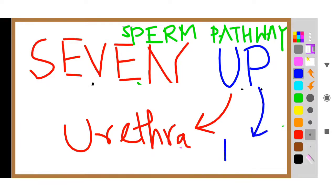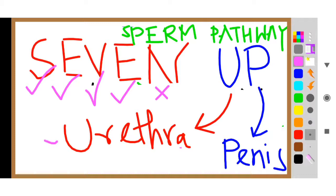S means seminiferous tubules, E means epididymis, V means vas deferens, E means ejaculatory duct, N means none, then U means urethra, and P means penis. So this is the sperm pathway. In this way a sperm is produced and it comes through a special pathway.